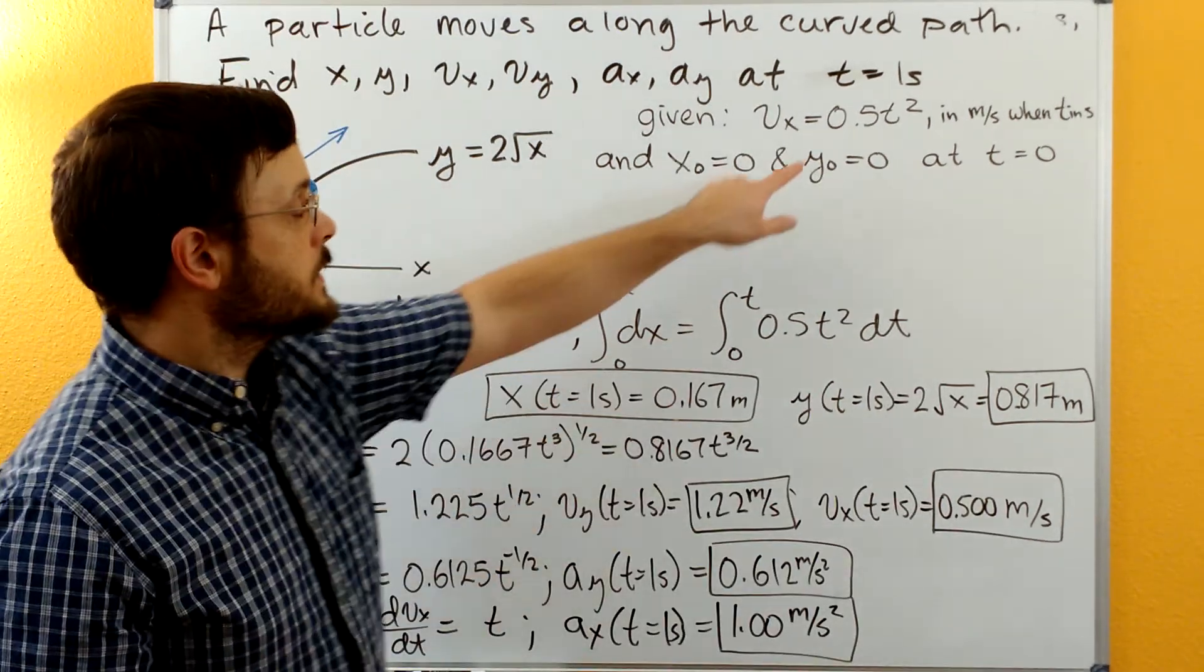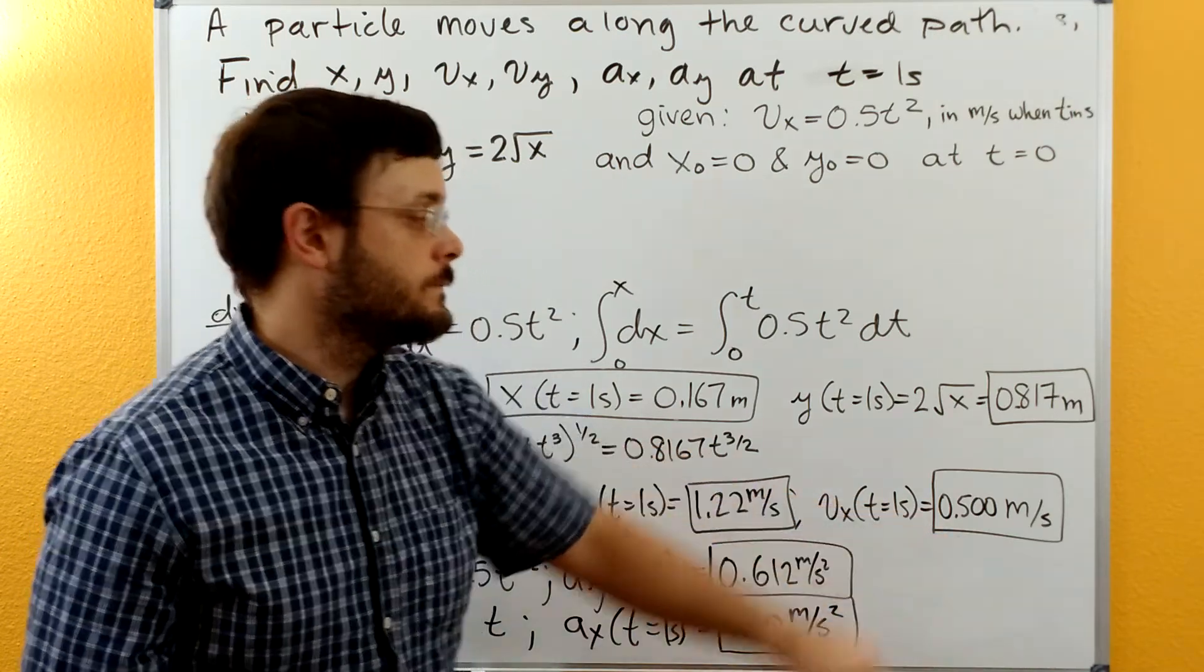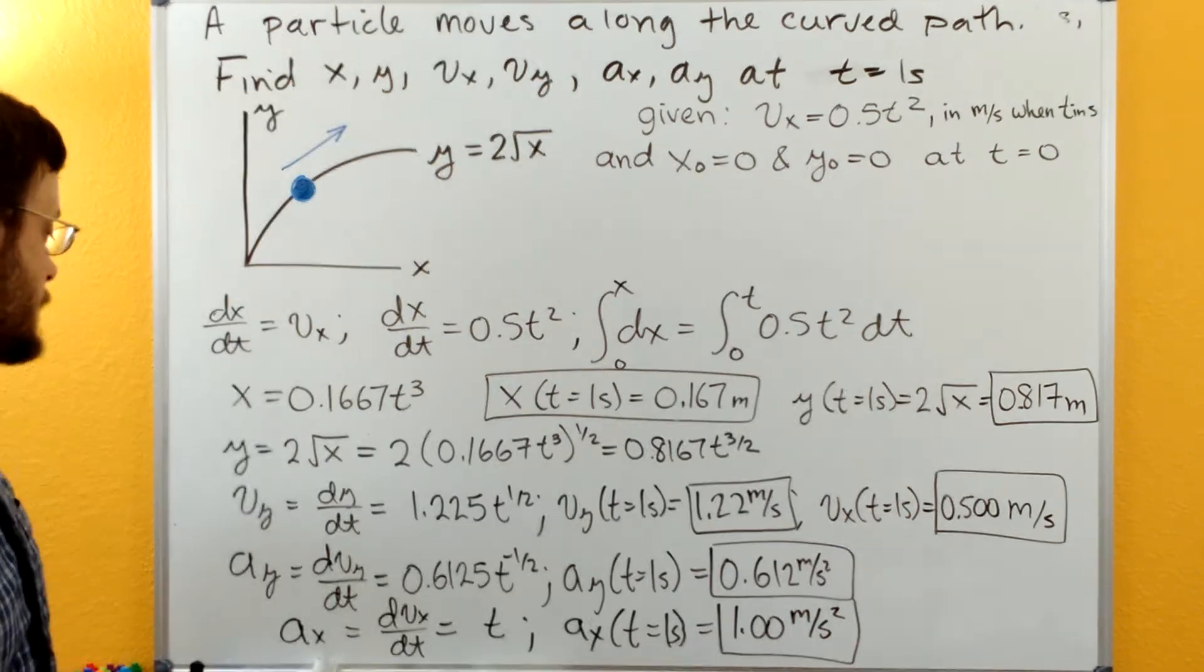And for our vx, we already have the function. So we just plug in t equals one second and get vx equals 0.5 meters per second.